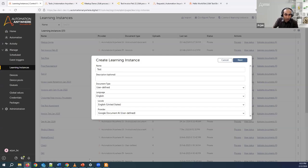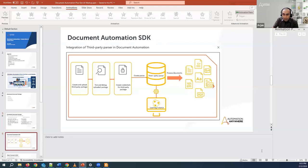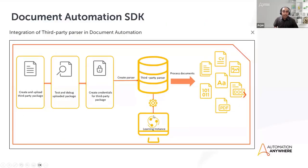Let me also quickly show you how that's all created in a slide. This is the overall process for using your own parsers: you first create and upload a third-party package — for example, if you want to use AWS Textract, you create a package using our SDK, select the AWS recognizers, test the package, and create credentials. In document automation, I did not use any specific credentials because it's all integrated and comes as a package. However, if you want to use your own third-party parsers, you'll have to create your own credentials, store them in the credential vault, and then call those parsers in your learning instance to process the documents.